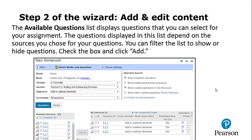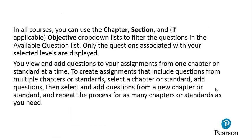Step 2: Add and edit content. The available questions list displays questions you can select for your assignment. The questions displayed depend on the sources you chose. You can filter the list to show or hide questions — check the boxes and click Add. In all courses, you can use chapter, section, and objective drop-down lists to filter the questions in the available question list. Only the questions associated with your selected levels will be displayed.